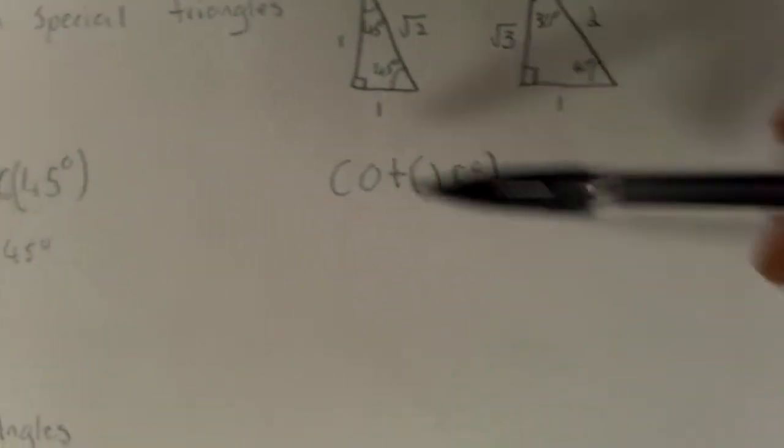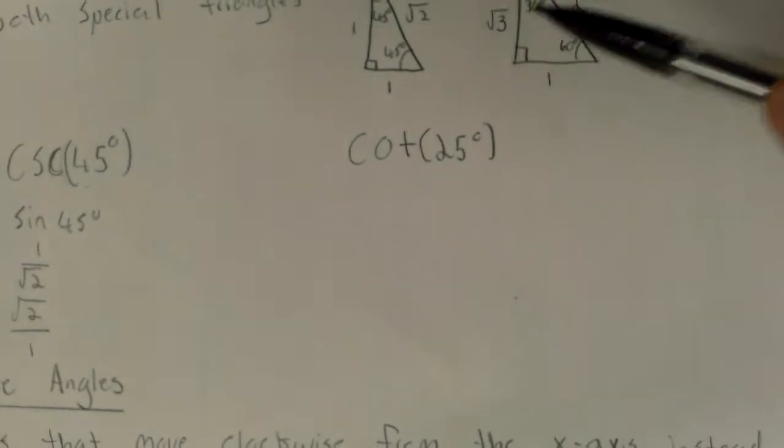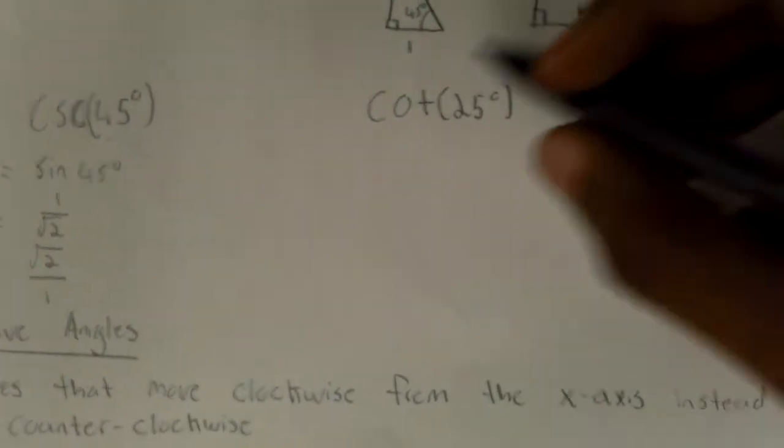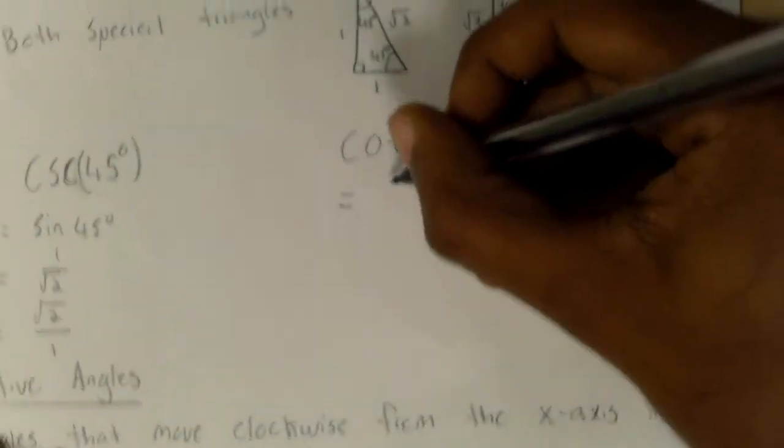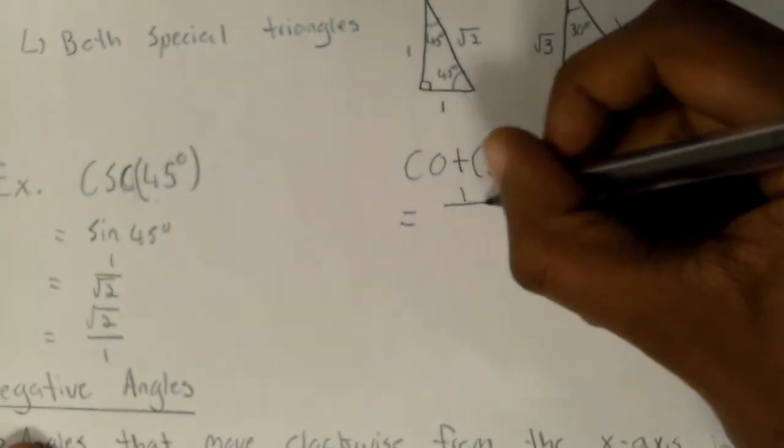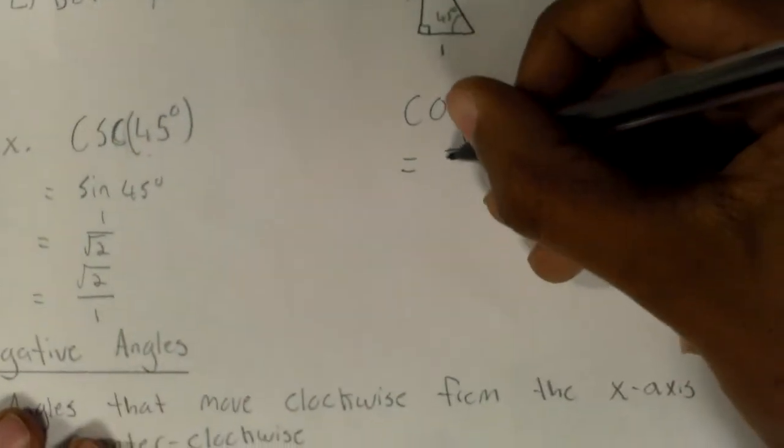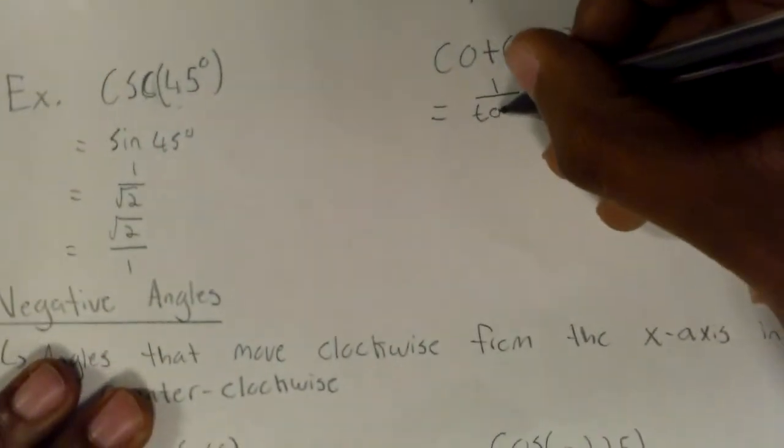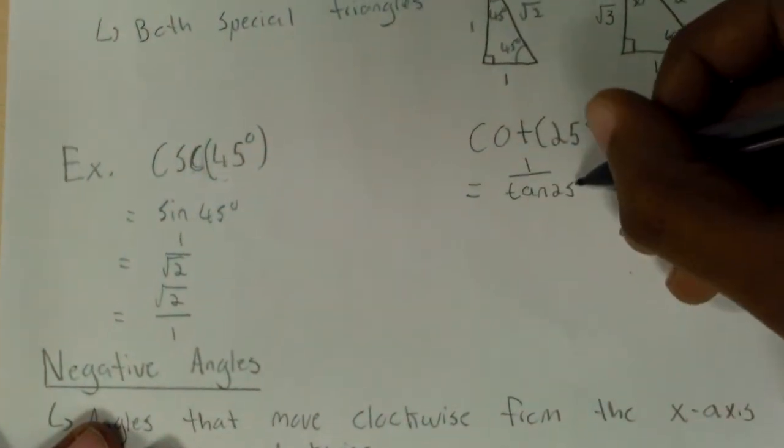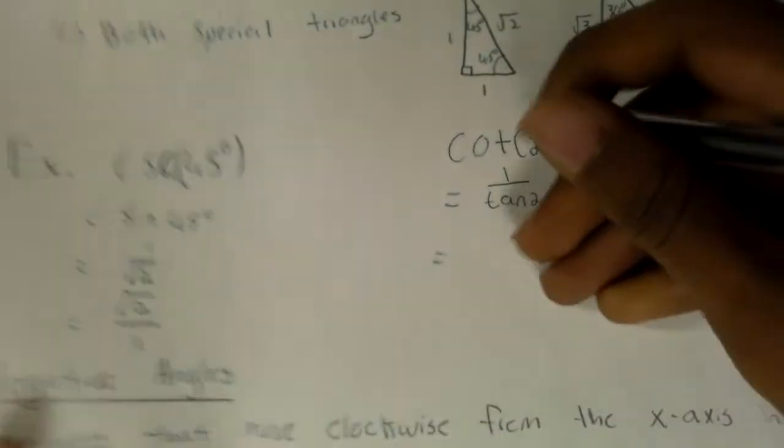And if you do the same, but for an angle that is not in any of the two special triangles, the steps that you do to find the answer is you do 1 over the ratio. Since it's cotangent, the ratio is tan. So tan of 25 degrees. So if you do that, if you plug that into your calculator,